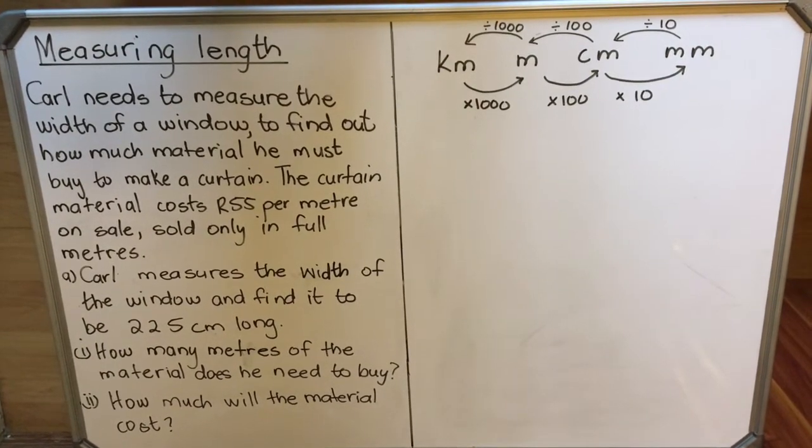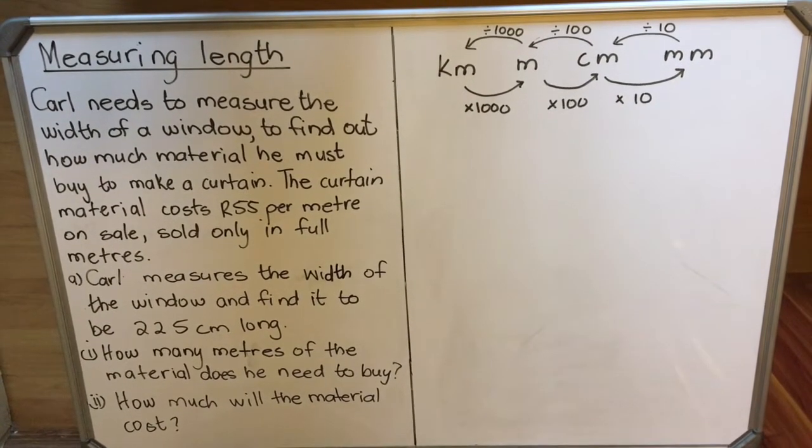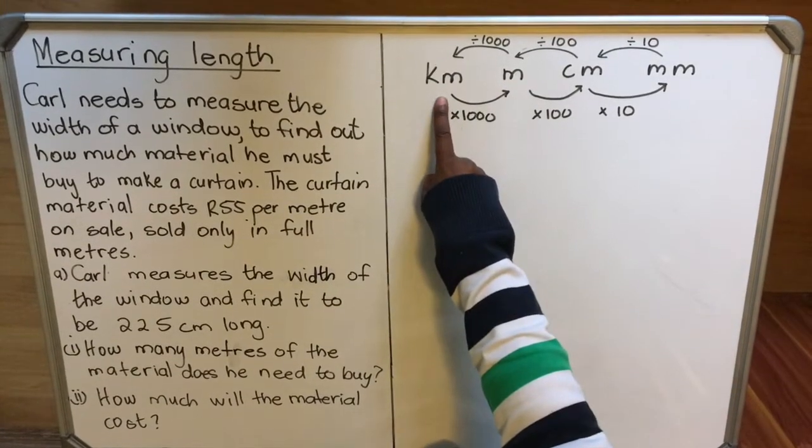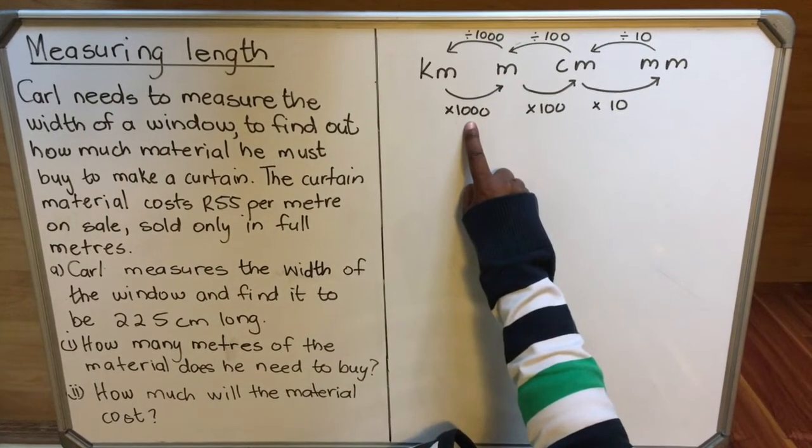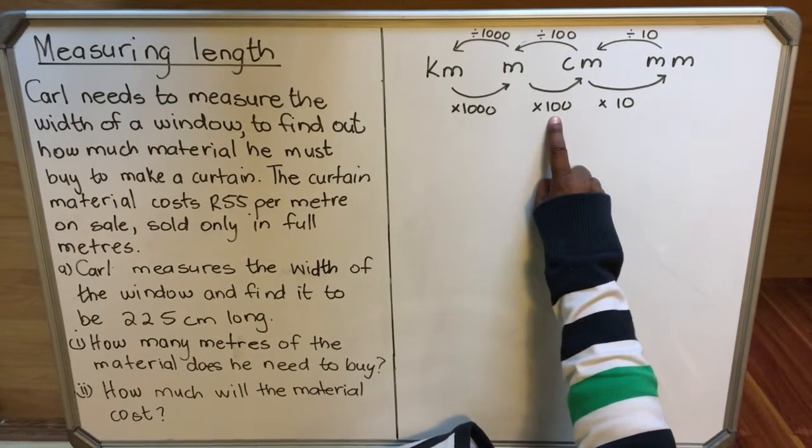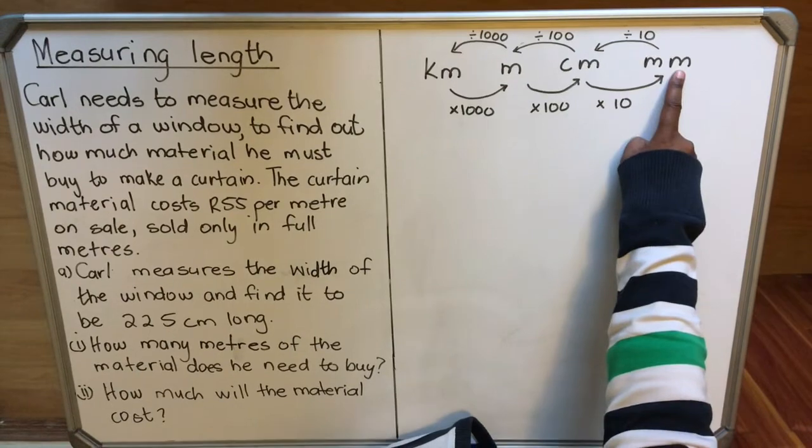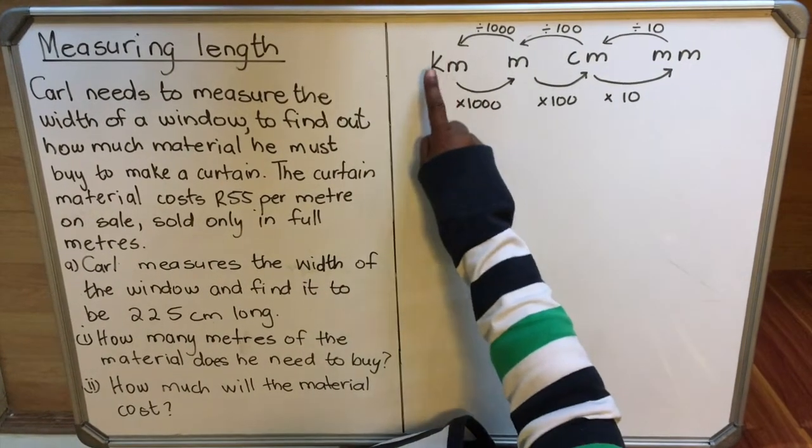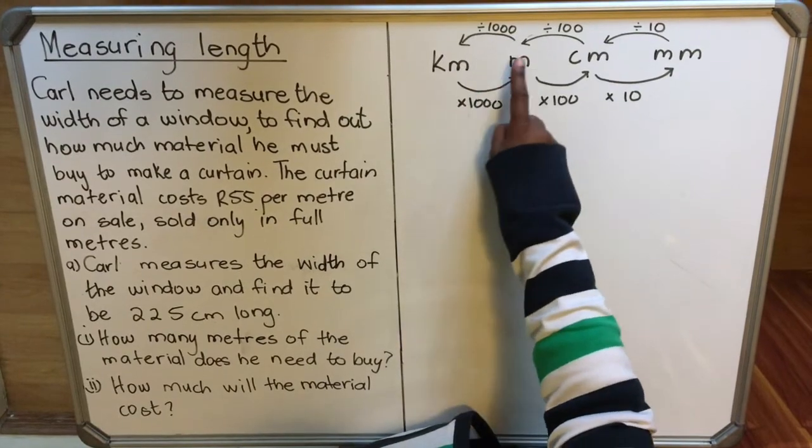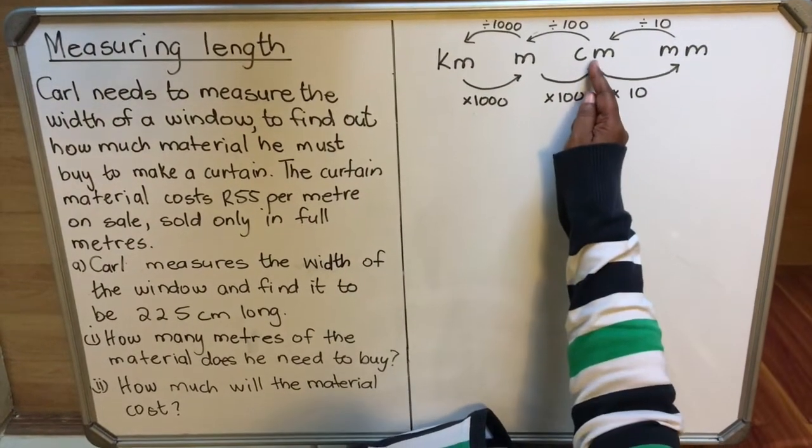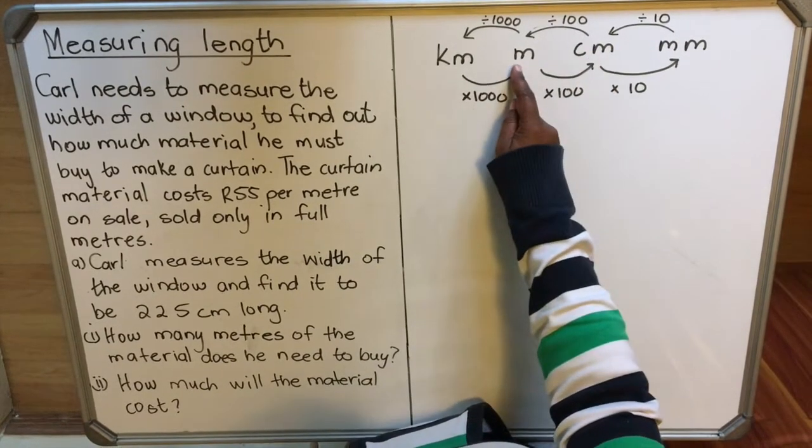Let's go to a conversion table that works every time and makes our lives very easy. When you convert from kilometers to meters you multiply by 1000. From meters to centimeters you multiply by 100. From centimeters to millimeters you multiply by 10. When kilometers are bigger than meters you multiply. But when you go from a smaller unit to a bigger one you divide.